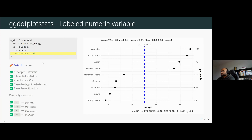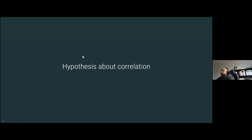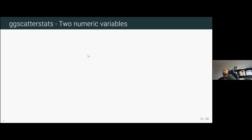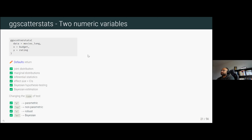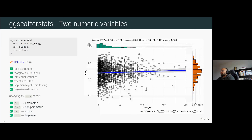The next common hypothesis is about correlation analysis. For this, the package provides gg_scatter_stats to see the association between two numeric variables. The function call: you give it the data frame, then x and y variables. The defaults return the joint distribution, marginal distributions for each variable, inferential statistics in the subtitle, effect size estimates and uncertainty, and in the caption, Bayesian hypothesis testing and estimation details.